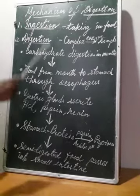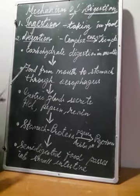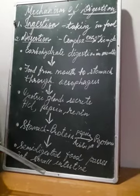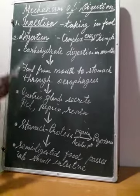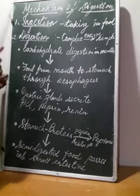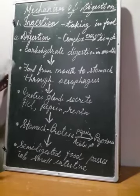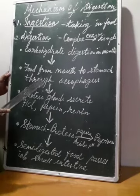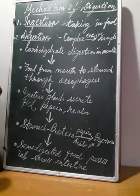In the mechanism of digestion, as you have already learnt in nutrition in amoeba, there are 5 processes. One is ingestion, two digestion, third absorption, fourth assimilation, and the fifth one is egestion.